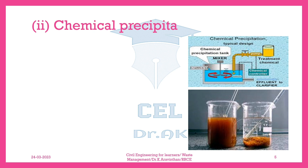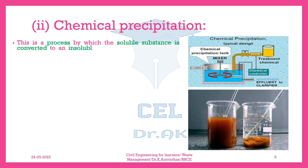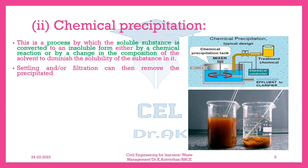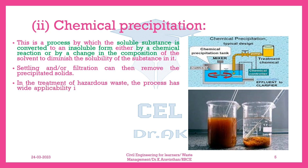Chemical precipitation. This is a process by which a soluble substance is converted to an insoluble form either by a chemical reaction or by a change in the composition of the solvent to diminish the solubility of the substance in it. Settling and/or filtration can then remove the precipitated solids. In the treatment of hazardous waste, the process has wide applicability in the removal of toxic metals from aqueous wastes by converting them to an insoluble form.